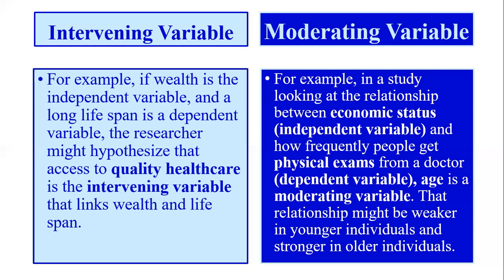Let me give a leadership example. For intervening variable: the relationship between transformational leadership style and employee creativity, mediated by intrinsic motivation — so intrinsic motivation is the intervening variable. For moderating variable: job performance moderates the relationship between transformational leadership and employee creativity, either strengthening or weakening the effect of the intervening variable, intrinsic motivation. This is the difference between intervening variable and moderating variable.